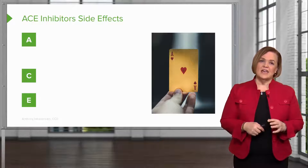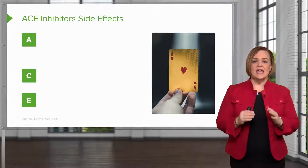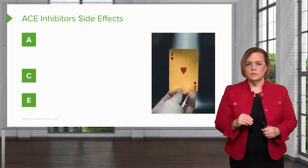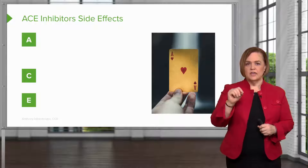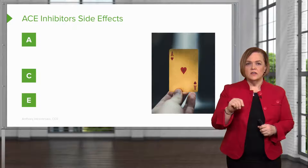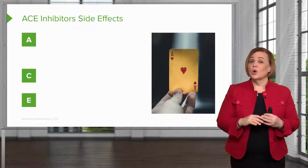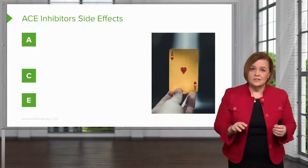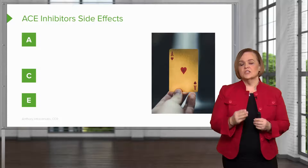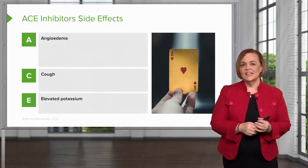The side effects for ACE inhibitors spell out A-C-E. Write those three capital letters in your notes: capital A, capital C, capital E. There are lots and lots of side effects for ACE inhibitors, but I want you to remember these three — and look at that, they spell ACE.